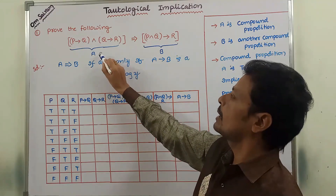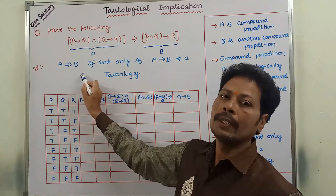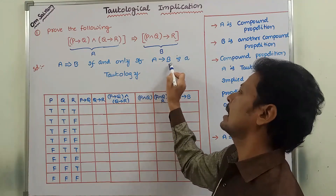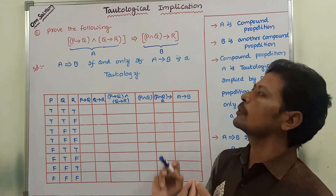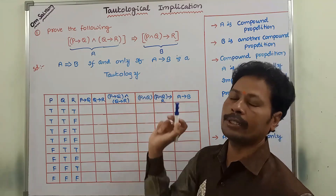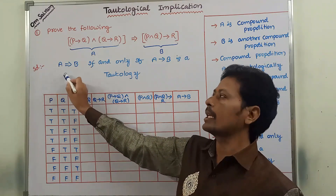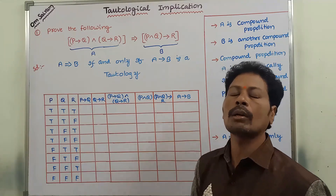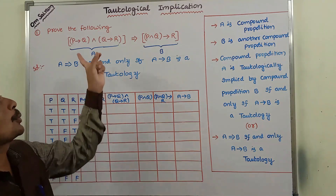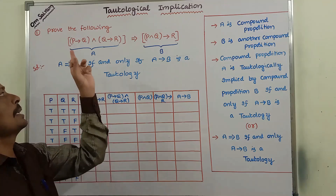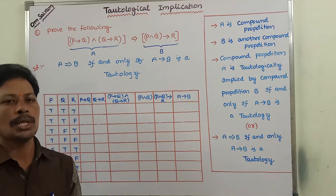We have to prove that A implies B. To prove that A implies B, we have to show that A conditional B is a tautology. We will use the truth table method to prove whether compound proposition A is tautologically implied by compound proposition B.